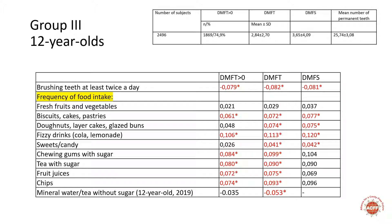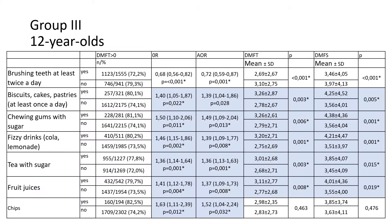Similar analysis was made for 12-year-olds and it showed similar influence of food products containing sugar. The logistic regression analysis also confirmed only a slight beneficial effect of tooth brushing if exposure to sugar is too high.